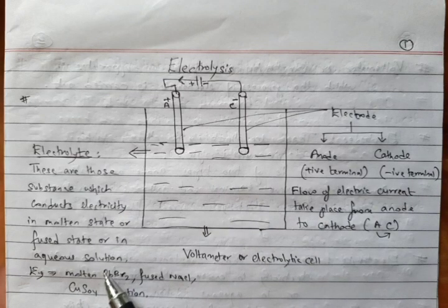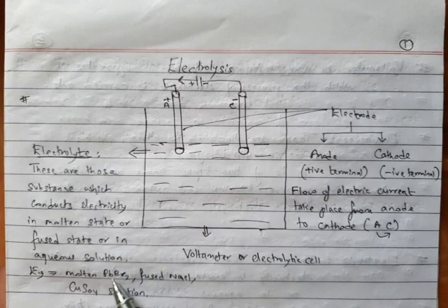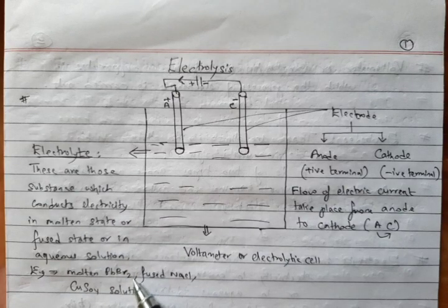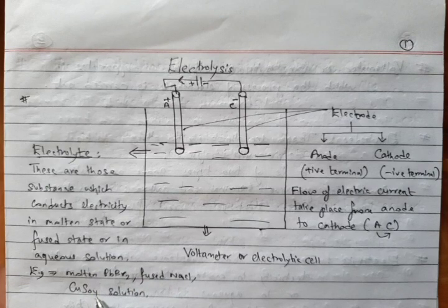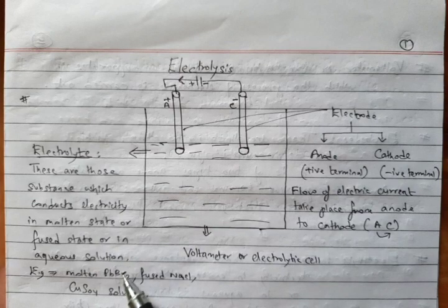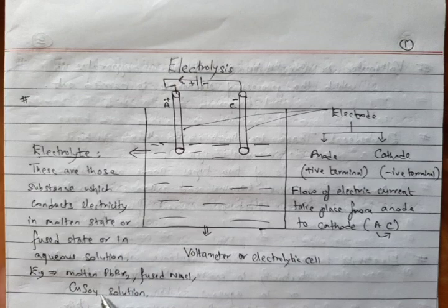Some examples of electrolytes: molten lead bromide — lead is Pb, bromide is Br, so the formula is PbBr₂ (the 2 comes from the valency of lead) — fused NaCl, and copper sulfate solution. Lead bromide is in molten state, NaCl is in powdery form, and in copper sulfate solution there is copper sulfate plus water.